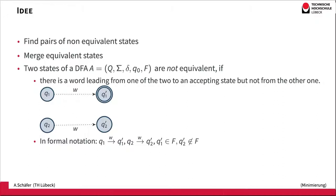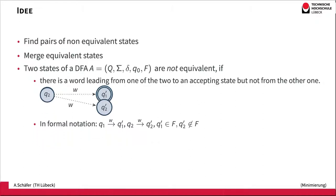Let's assume we have two states q1 and q2. If there's a word w such that from q1 we can go with word w to an accepting state, whereas from q2 with the same word w we end up in a non-accepting state, then we know that both states cannot be equivalent. Merging these two states would not be possible. Because we're dealing with deterministic finite automata, there's exactly one run for each and every word, so a merge like this is impossible — we have to distinguish whether we would go to an accepting or non-accepting state.